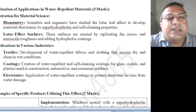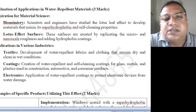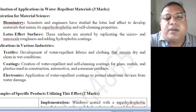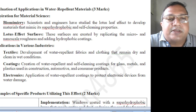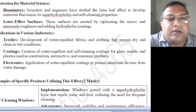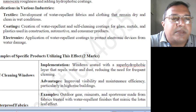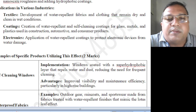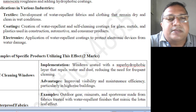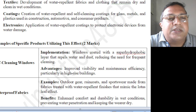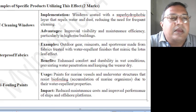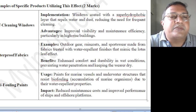For evaluation of applications in water repellent materials: through biomimicry, scientists and engineers have studied the lotus leaf effect to develop materials that mimic its superhydrophobic and self-cleaning properties. Lotus-effect surfaces are created by replicating micro and nanoscale roughness and adding hydrophobic coatings. Major application areas include textiles — for water repellent fabrics and clothing that remain dry in wet conditions — surface coatings for glass, metals, and plastics used in construction and automotive industries, and water repellent coatings to protect electronic devices from water damage.